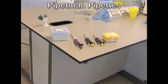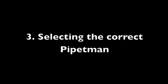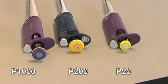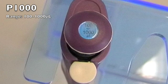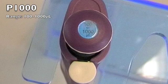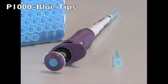Pipetmen are used to accurately measure liquids of volumes less than or equal to 1 milliliter. Selecting the correct pipetman is very important, as the P1000, P200, and P20 each have a unique range of use. The P1000 has a range of 100 to 1000 microliters; however, it should only be used for volumes above 200 microliters and lower than 1000 microliters. The P1000 is compatible with the blue tips found on your bench and will not work with the yellow tips.